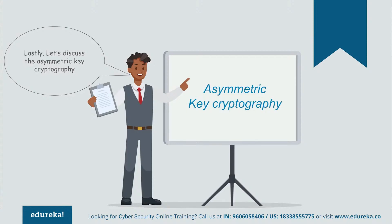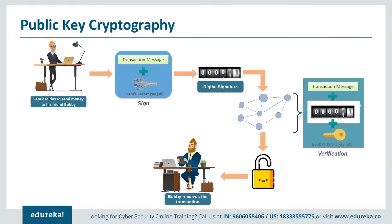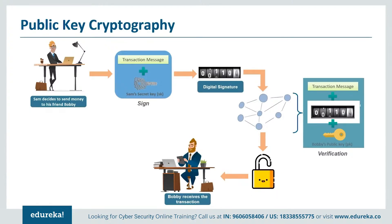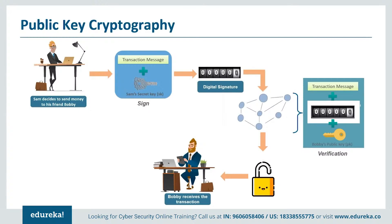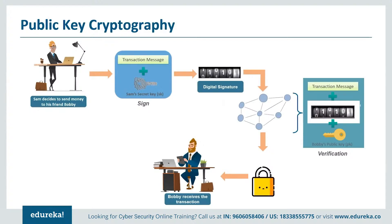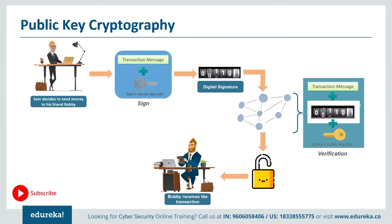Asymmetric cryptography, also known as public key cryptography, uses a pair of keys: a public key which may be widely disseminated, and a private key known only to the owner. This accomplishes two functions — authentication, where the public key verifies that the holder of the paired private key sent the message, and encryption, where only the paired private key holder can decrypt a message encrypted with the public key. The strength of a public key system relies on the computational effort required to find the private key from its paired public key.